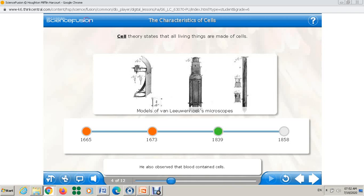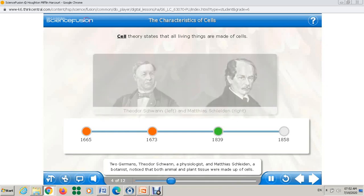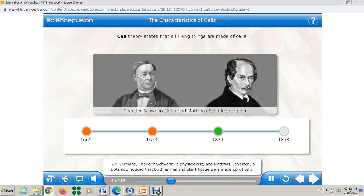This is to tell other scientists to put the points of this cell theory. Listen carefully. Two Germans, Theodore Schwann, a physiologist, and Matthias Schleiden, a botanist, noticed that both animal and plant tissue were made up of cells. In 1839, they proposed that all living things are made of cells and the products of cells.